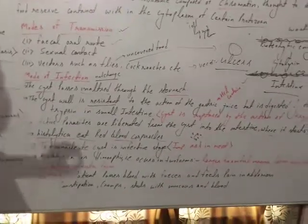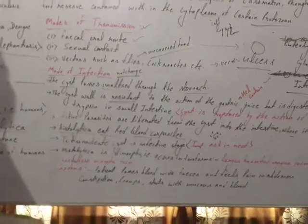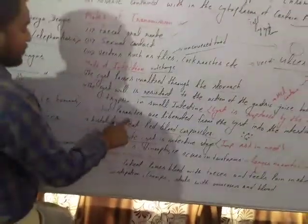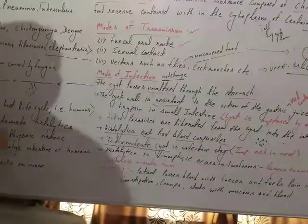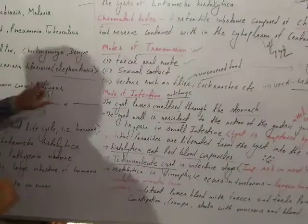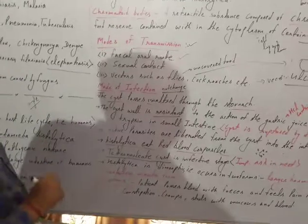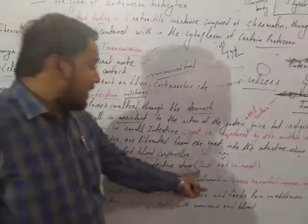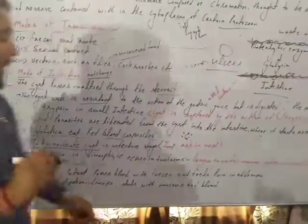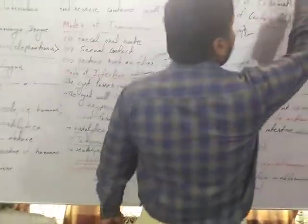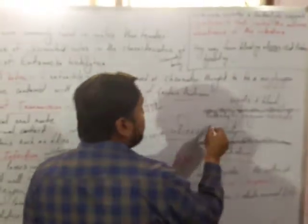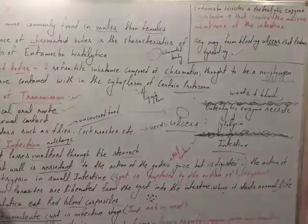An important question is: what is the infective stage in Entamoeba histolytica? The answer is the tetranucleate cyst. Entamoeba histolytica digests red blood cells (RBCs). The name of the enzyme secreted by Entamoeba is cytolysing, which produces ulcers in the intestine and causes bleeding. We will discuss another topic in the next lecture.